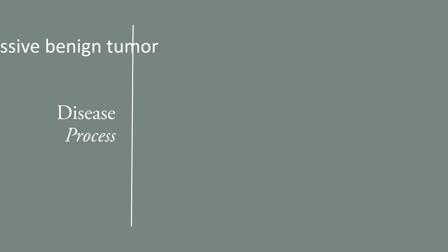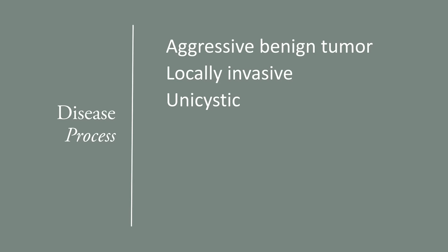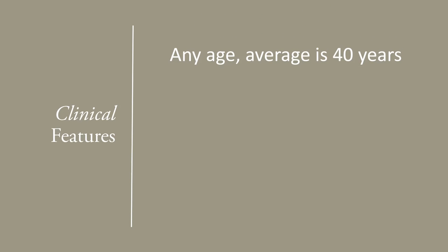Ameloblastoma is an aggressive benign tumor. This tumor is locally invasive, destroying a large part of the jaws. It can be three types: unicystic, multicystic, and desmoplastic. Ameloblastoma is intraosseous, but there is also a soft tissue variant and a malignant variant. Ameloblastoma can happen at any age — children as young as three or four years old or people in their 80s may develop it — however, the average is about 40 years. Ameloblastoma is more common in males, and in the United States, it is also more common in African Americans.